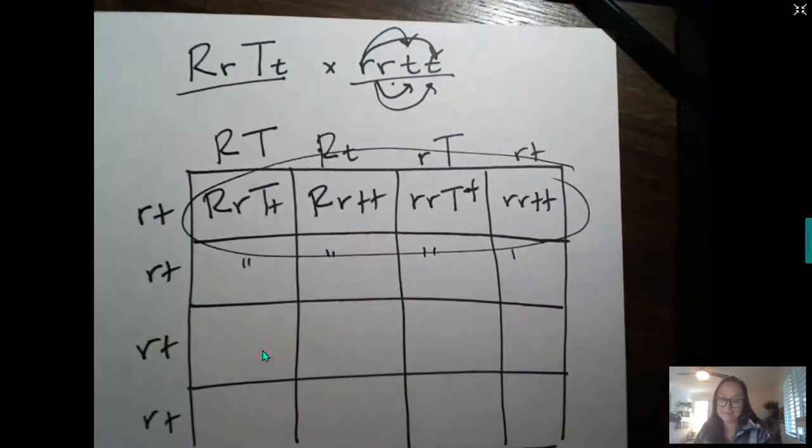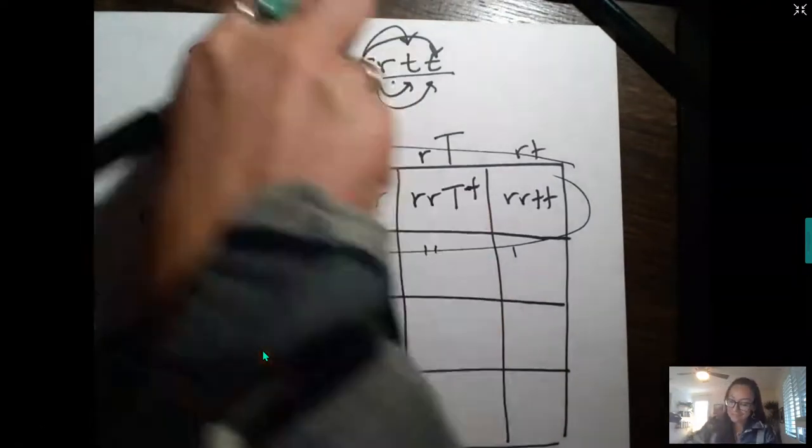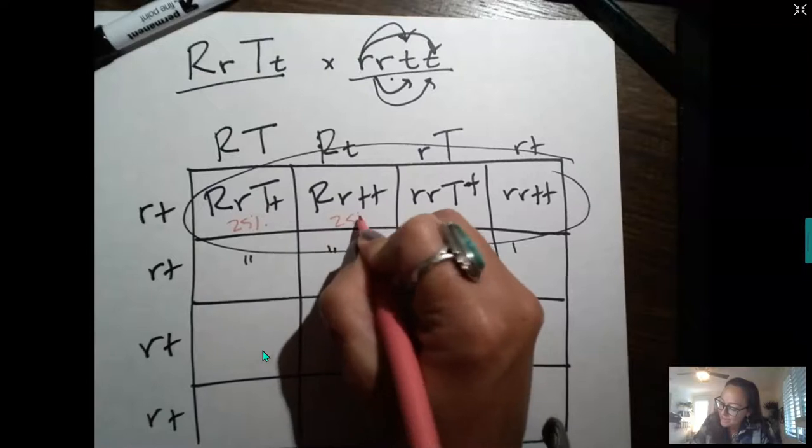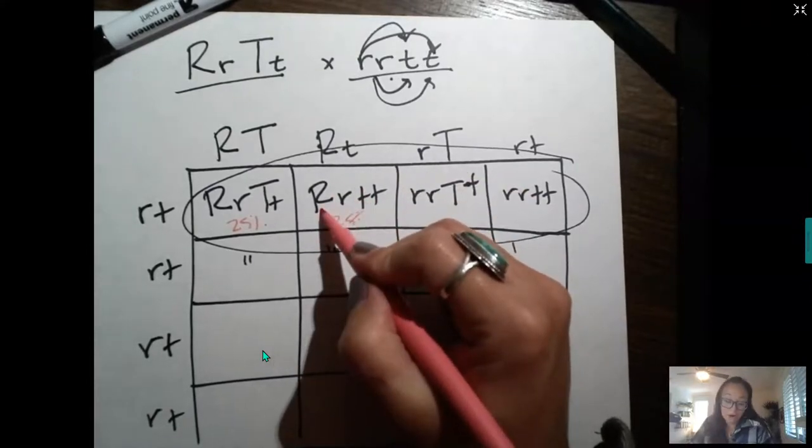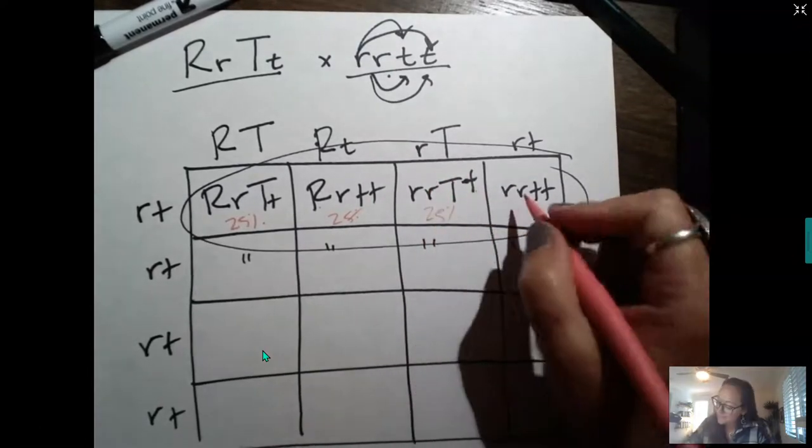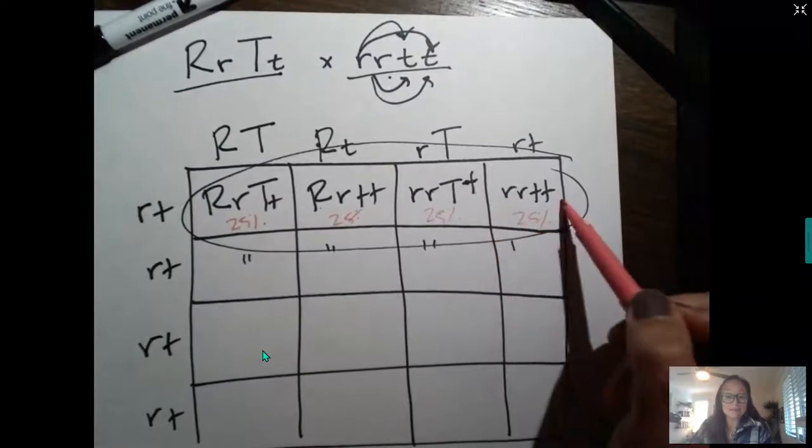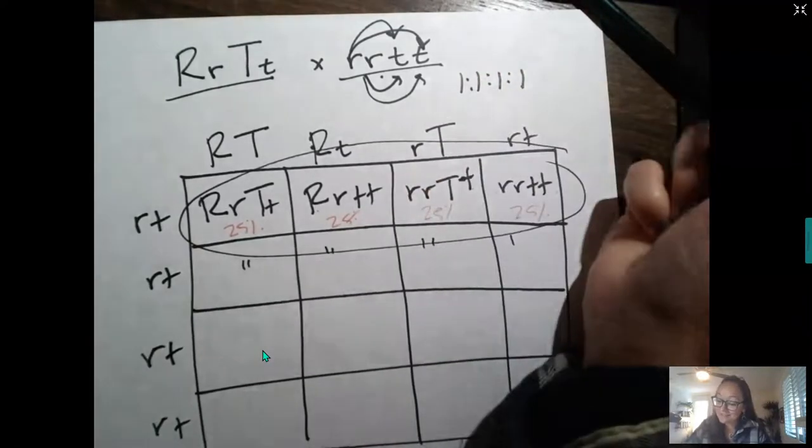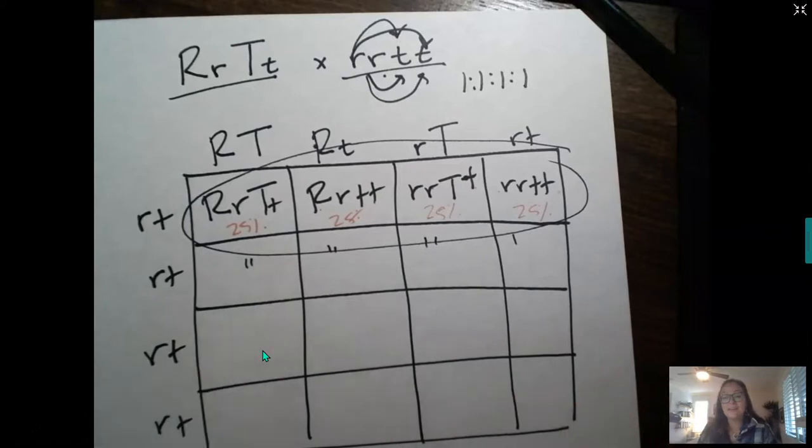And we see here there's a 25% chance that the offspring will be dominant for both traits. A 25% chance that the offspring will be dominant for the R trait and recessive for that one. A 25% chance recessive for the R but dominant for the T. And a 25% chance recessive for both. So the phenotypic ratio here is a 1 to 1 to 1 to 1. There's a 25% chance and equal likelihood that any of these phenotypes are possible. So that is how you set up a dihybrid cross and how it's connected to Mendel's laws of independent assortment and Mendel's law of segregation.